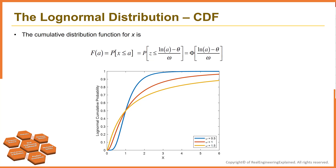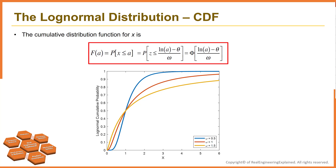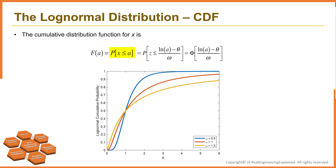The cumulative distribution function for log normal random variable X is defined as the probability that the log normal random variable X is less than or equal to some value A. This graph shows the cumulative distribution function for different values of the scale parameter omega. In this equation, Z is a standard normal random variable, a Z value, which can be used to determine the probability.